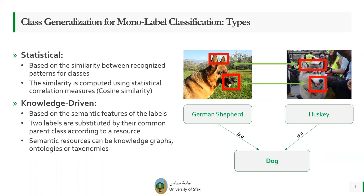We'll be mainly interested in one type of class generalization: knowledge-driven class generalization, which is based on the is-a relations in semantic resources such as knowledge graphs, ontologies, taxonomies, metathesaurus, etc.